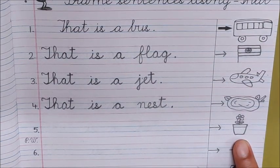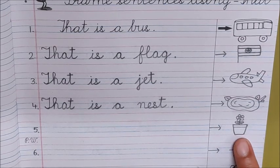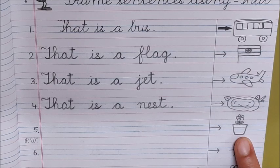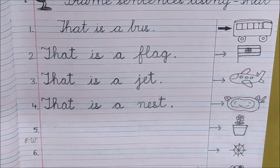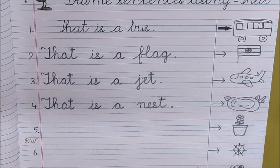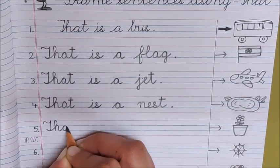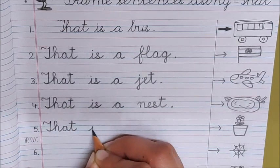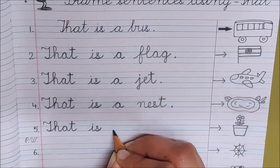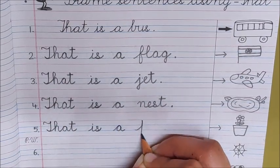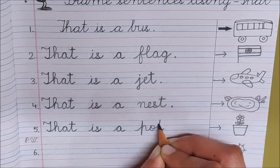Now look at the next picture and make a sentence on it. What is that? That is a pot. Write the sentence here. First you will write. Then I will write. I hope you have written. Now I am writing. That T H A T. That is a pot. Full stop.